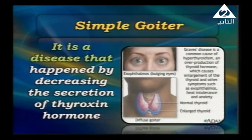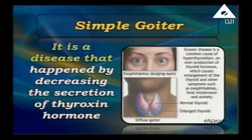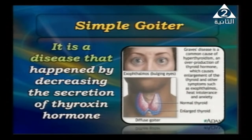Simple goiter is a disease caused by decreasing secretion of the thyroxine hormone. It results in bulging of the eyes and an enlarged thyroid gland. This condition is also called exophthalmos or simple goiter — the thyroid gland becomes enlarged and the eyes appear to protrude outward, as seen in the picture.